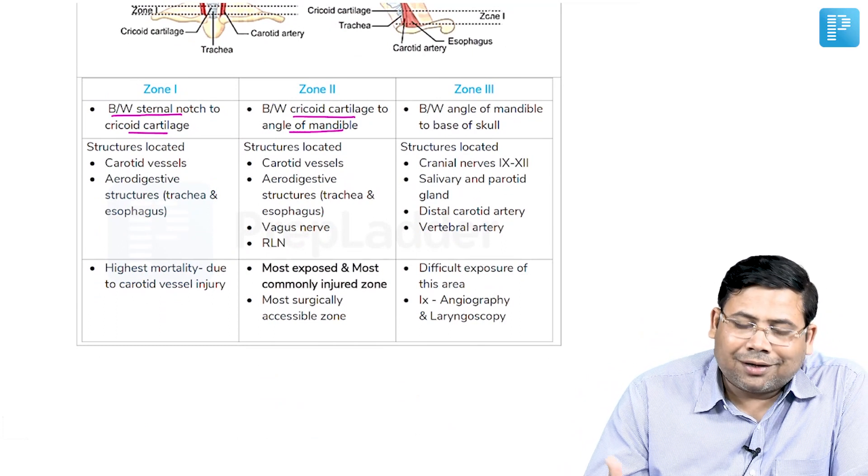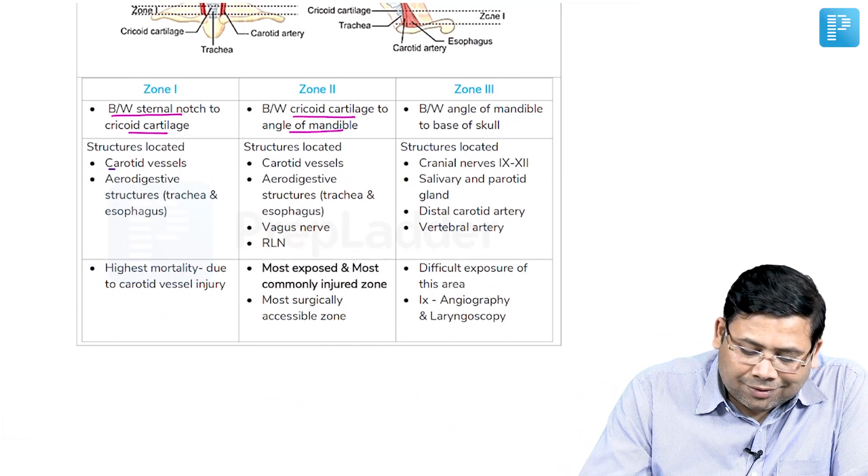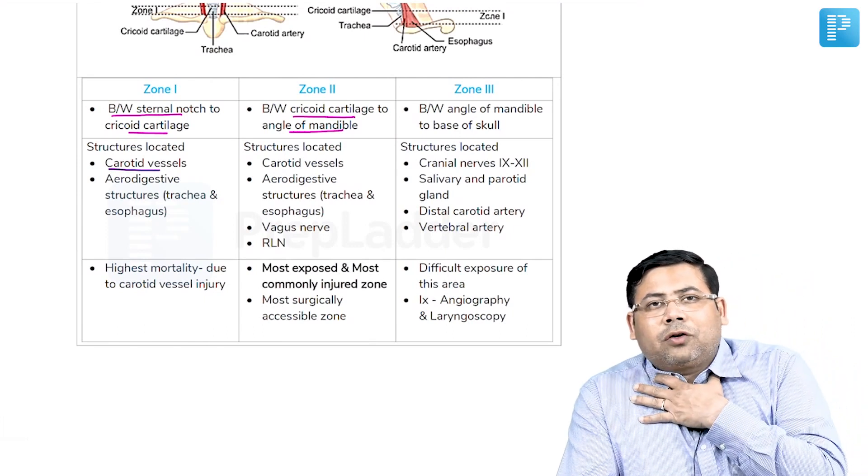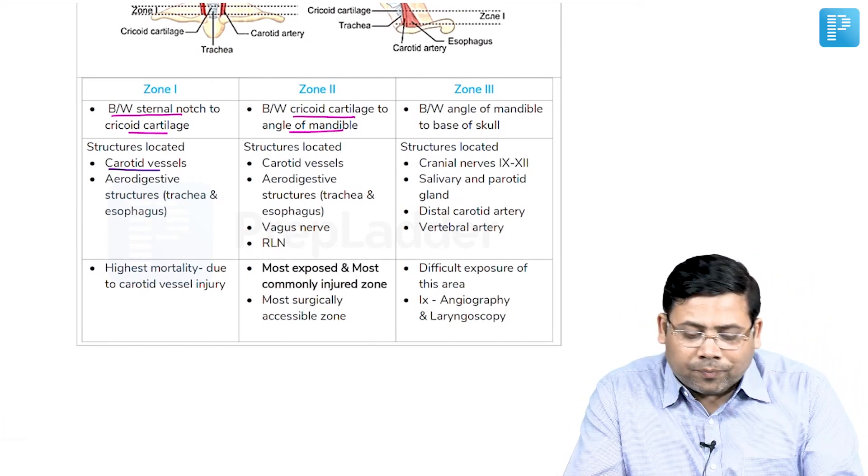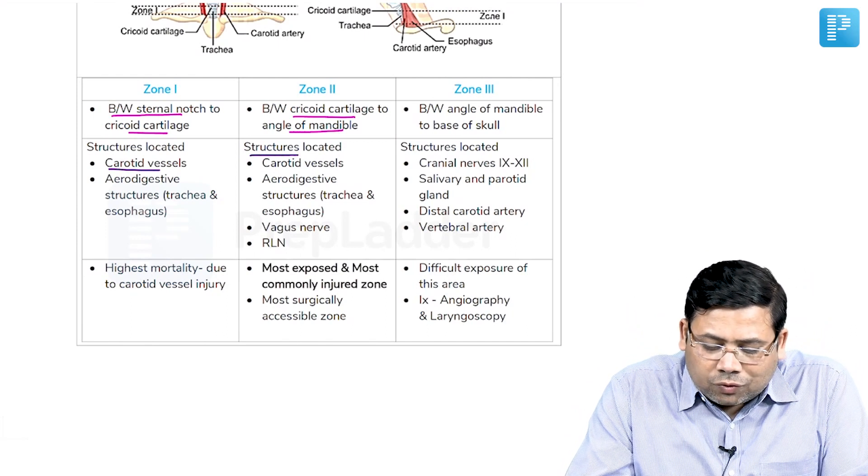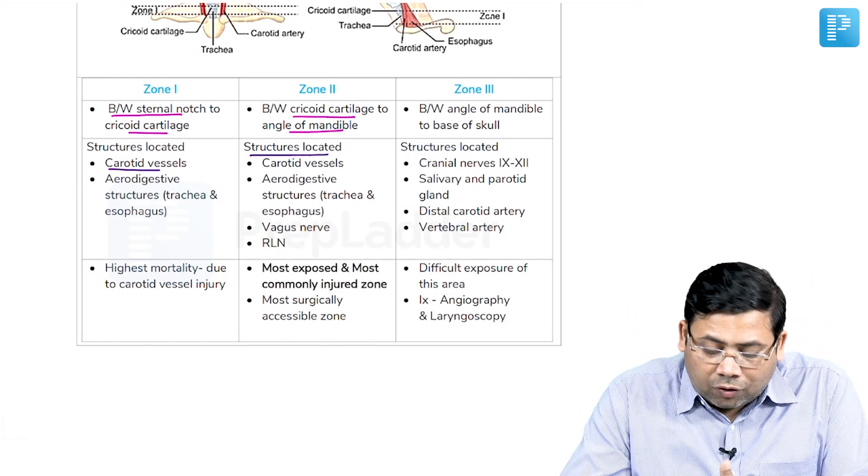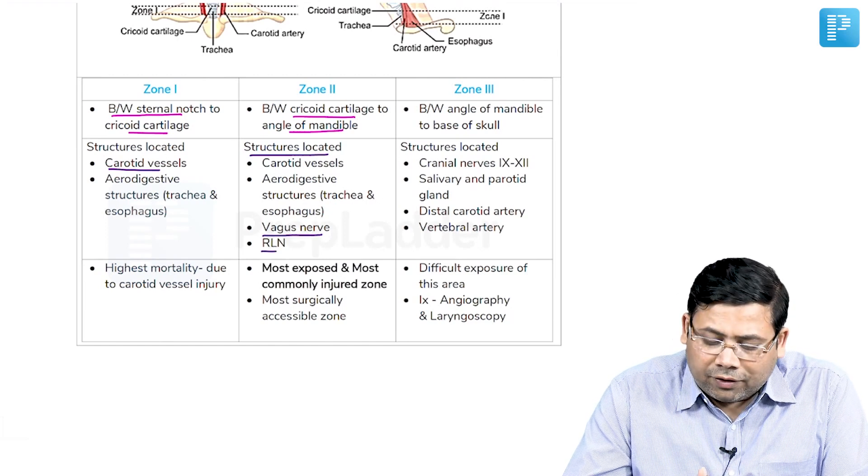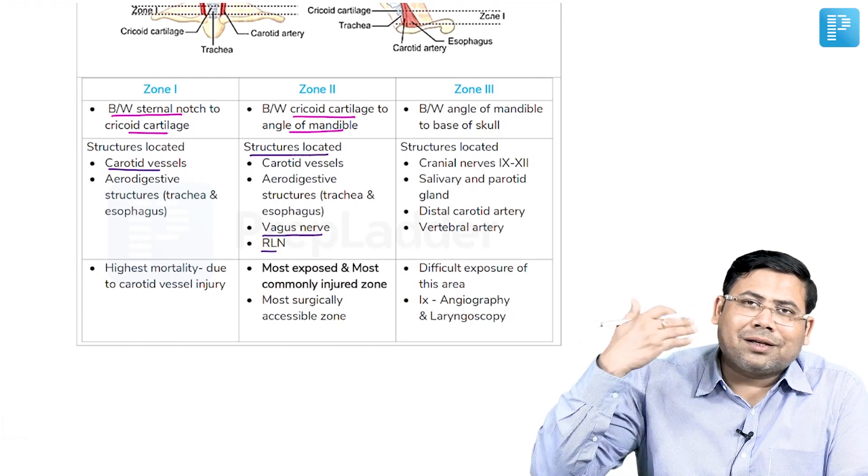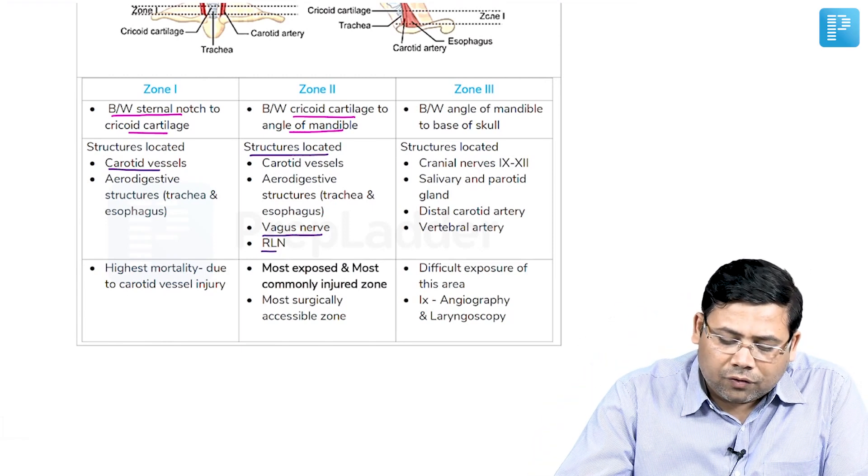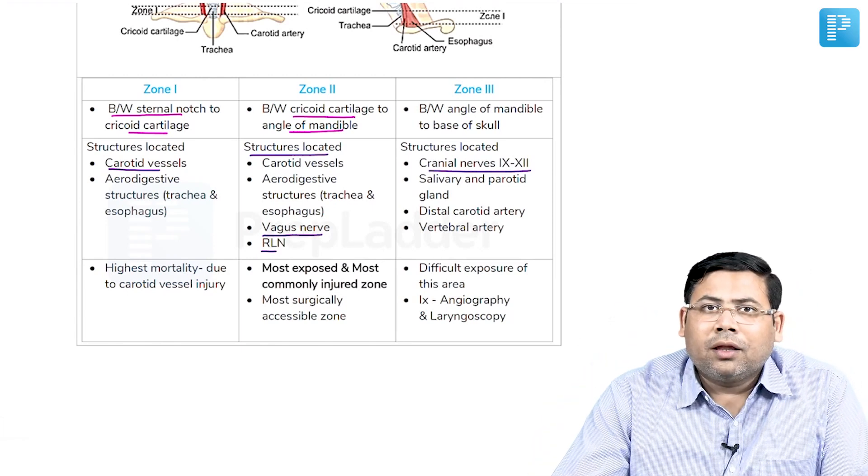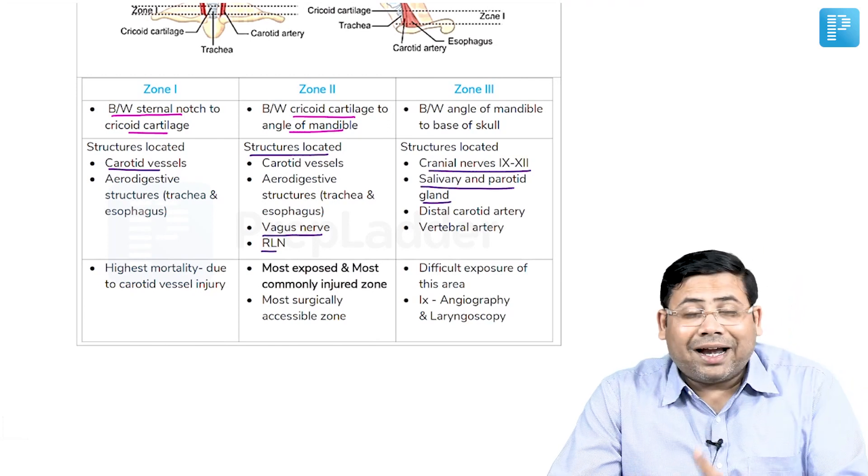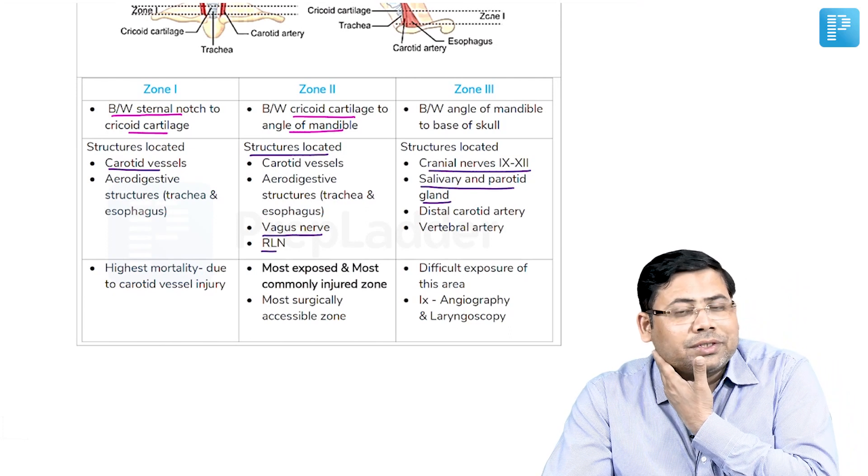If you see the great vessels are always there, you have carotid, you have the trachea and the esophagus as a part of the standard thoracic inlet. In zone 2 it is the carotid vessels along with that you have the nerves and that is what is making zone 2 very important. In zone 3 basically since the base of the skull is involved, you have important cranial nerves, hypoglossal, glossopharyngeal and then we have some glands also which can be injured or damaged here.